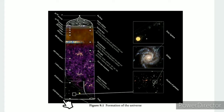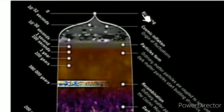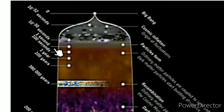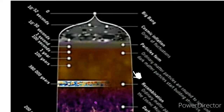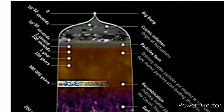If you zoom in on the timeline, the universe begins with the Big Bang. At 10⁻³² seconds, cosmic inflation occurs. Particles are formed, and then recombination of particles takes place — these are the early stages of the universe's evolution.